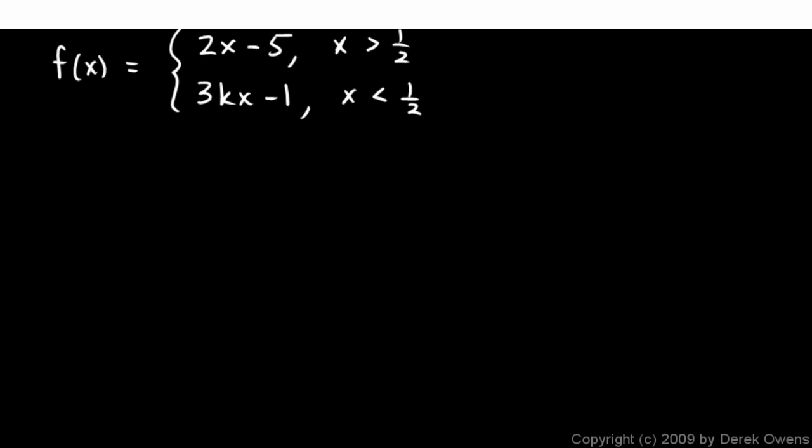Well, for the limit to exist at x equals 1 half, the left and the right hand limits both have to be the same. So the value of f as x approaches 1 half from the right, here when x is greater than 1 half, this has to be the same as the value of the function when x approaches 1 half from the left, when x is less than 1 half.